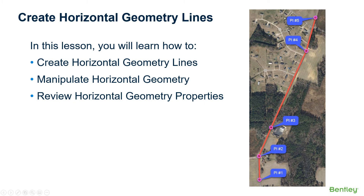In the previous lesson we learned how to attach a design file as a reference file containing aerial imagery. We're going to use this aerial imagery as a guide, as well as the circles in the aerial image file, to create the horizontal geometry lines for our alignment. The alignment we're going to create is made up of four tangent lines and three curves, and we'll begin by creating the tangent lines first, drawing lines between each of the circles. Each circle represents the PI point, or point of intersection, along our alignment.